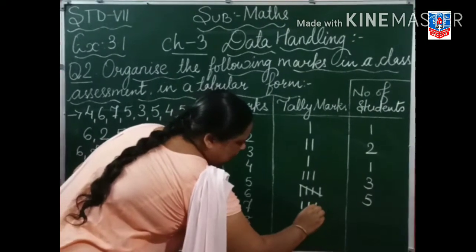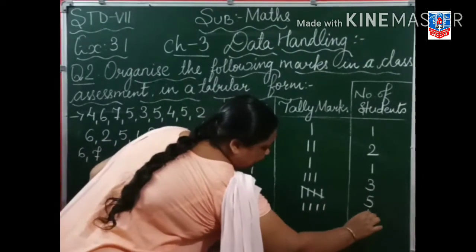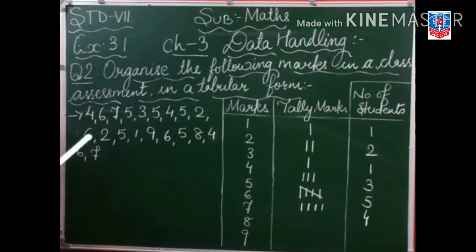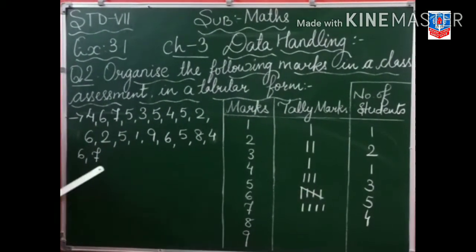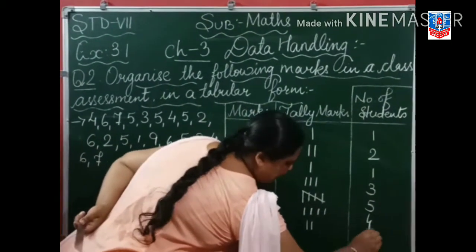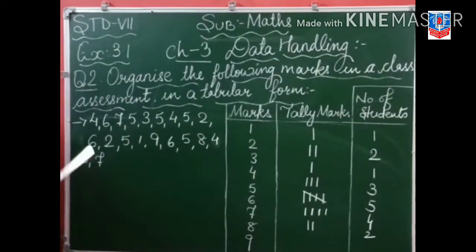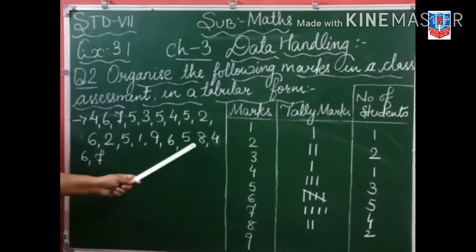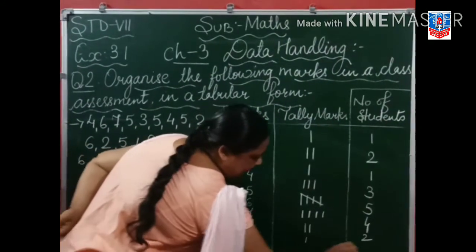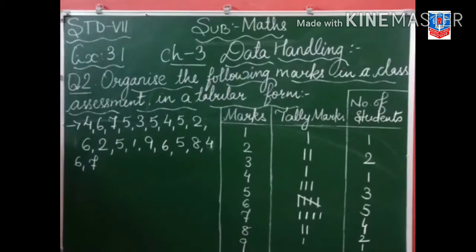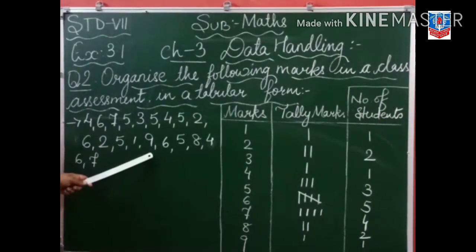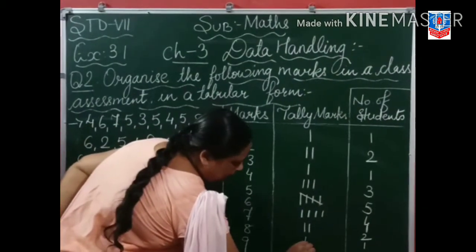Then seven: one, two — two students got seven marks. Eight: only one student. Nine: only one student.